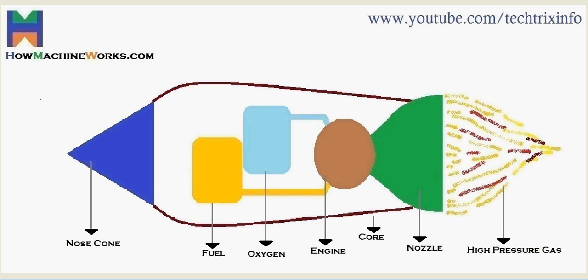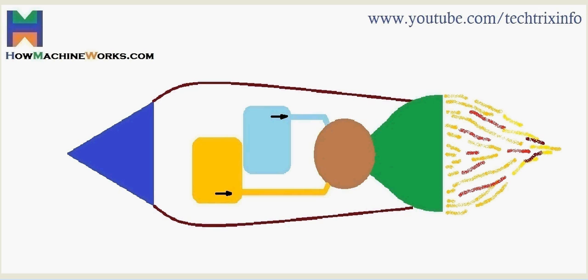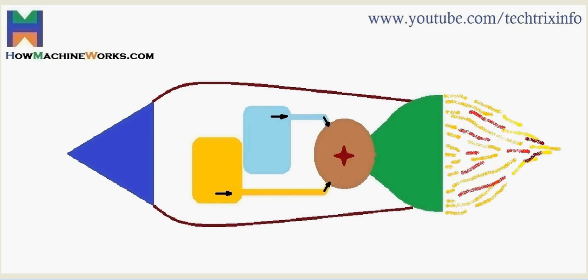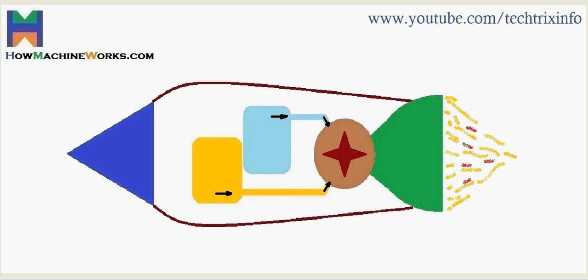Now let's see how it actually works. Here we have the oxygen and the fuel being given into the engine, and the combustion takes place inside the engine. You can see as the combustion takes place, high-pressure gas is ejected outside.